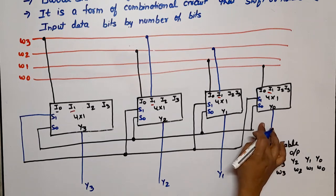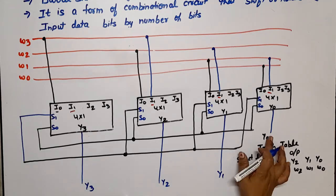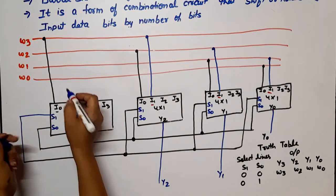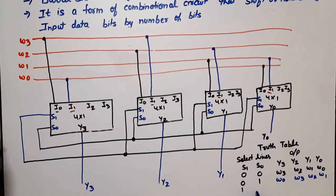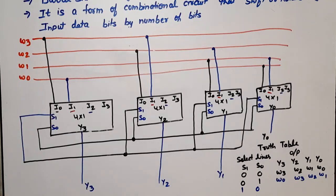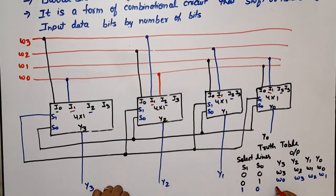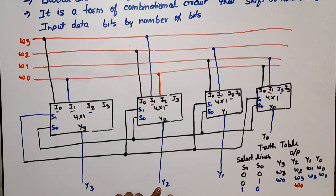When S1=1, S0=0, the I2 input is selected. Now Y3 gets W1, Y2 gets W0, Y1 gets W3, and Y0 gets W2. This is a right rotation by two bits, giving output W1, W0, W3, W2.